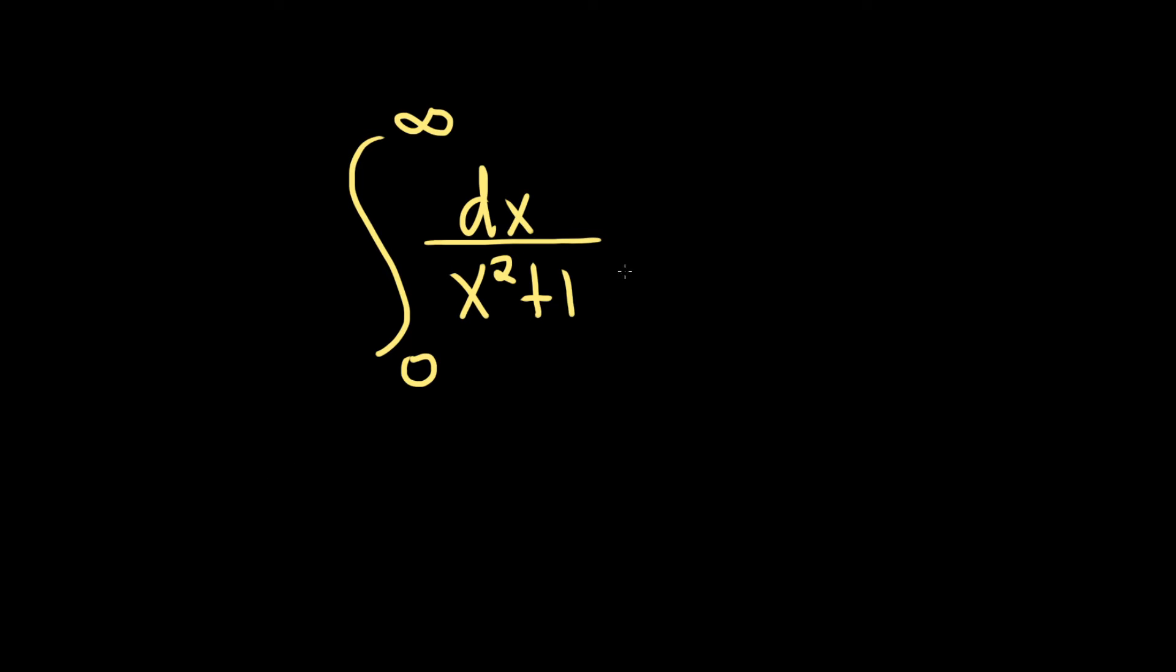There's a familiar formula we can use to integrate this. If you have the indefinite integral of dx over x squared plus a squared, this integrates to 1 over a times the arctangent of x over a plus a constant C.